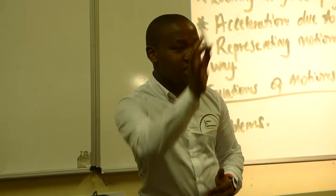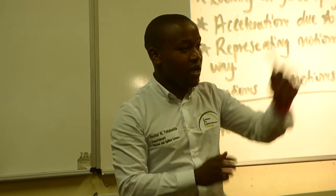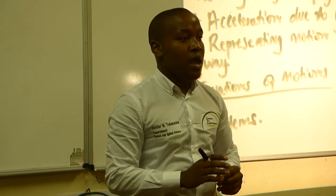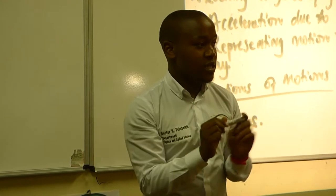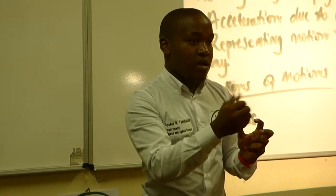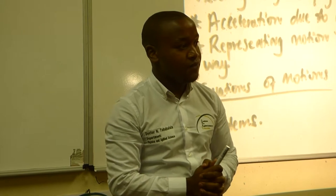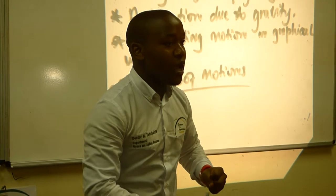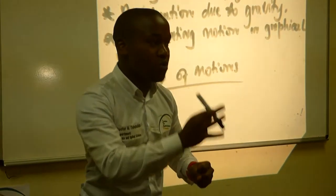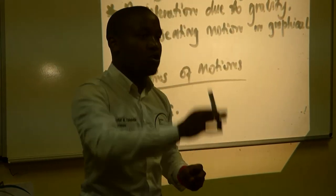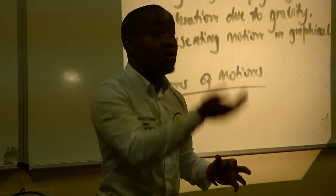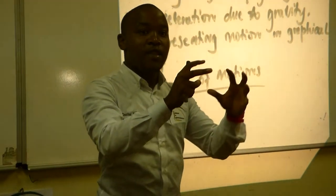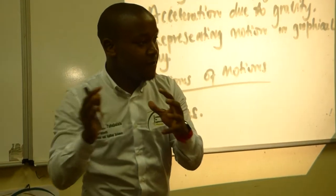An example of a projectile is this stick that I'm holding right now. It's a projectile because I can throw it up with an initial velocity. If I eliminate air resistance and I'm in a vacuum, this will be a projectile. Vertical projectile motion will consider throwing an object vertically upward — we are looking at the vertical motion of this object only. The study of this motion is called vertical projectile motion.